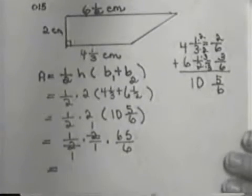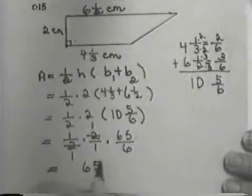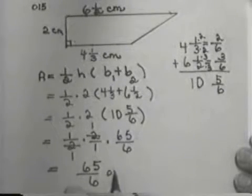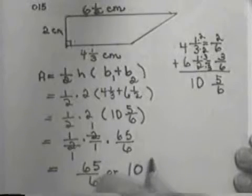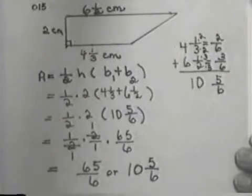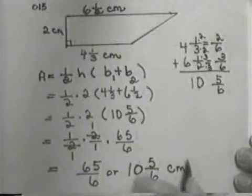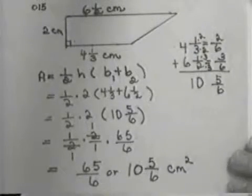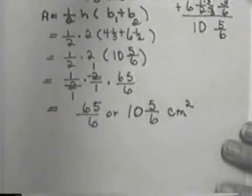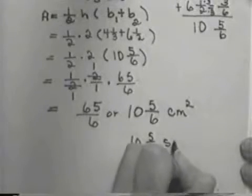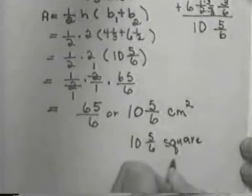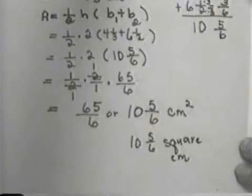I'm left with just 65 6's. Or I could make that a mixed number. 6 would go into 65 10 times. 10 times 6 is 60, with 5 6's left over. Again, I'm working with centimeters, so I need to put square centimeters, or write out the word square centimeters. Now I could put 10 and 5 6's square centimeters, or you could say 65 6's square centimeters.